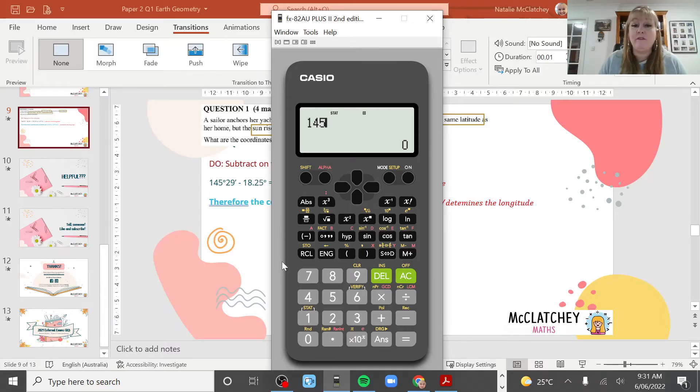So what I'm going to do firstly is enter 145 degrees, so I actually need to press this degrees button here - it's a little funny one that looks like speech marks on the actual calculator - and I'm going to add the 29. So now I've got 145 degrees and 29 minutes, but if I press the equals button it's going to change that into degrees and minutes.